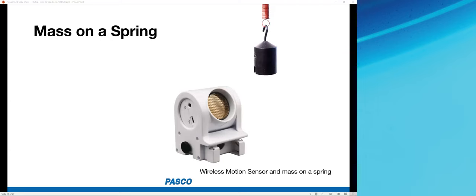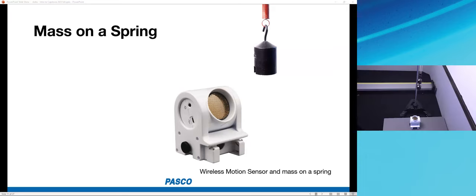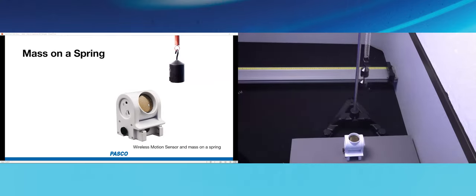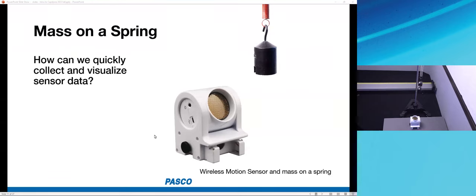Let's jump into our first activity to get some data into Capstone. I have a physical setup with a hanging 200-gram mass on a spring, positioned above one of our wireless motion sensors that uses ultrasound — like echolocation for a bat or dolphin — to determine the position of that mass over time. The question is: how can we quickly collect and visualize sensor data from this wireless motion sensor?